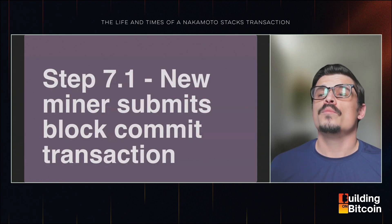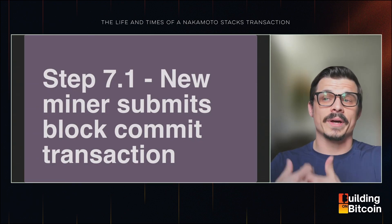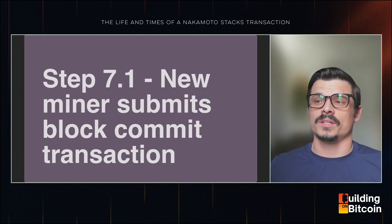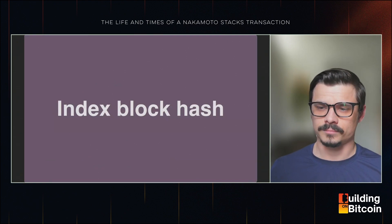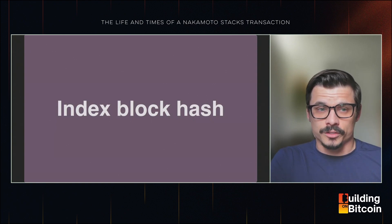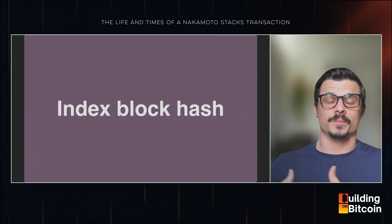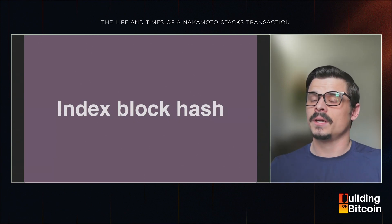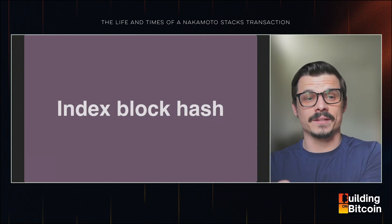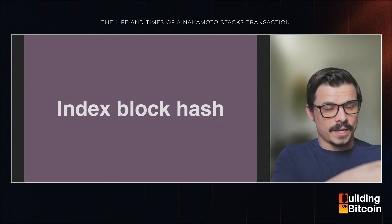Step 7.1: a new miner submits a block commit transaction. Miner A has been creating Stacks blocks during their tenure, and now Miner B submits a block commit transaction. The system selects the winning miner for the next tenure based on their block commit transaction, which includes a key field called an index block hash. The index block hash is the hash of Miner A's first-ever produced Stacks block, and this is the key to Bitcoin finality because it's written by a Stacks miner to the Bitcoin chain.